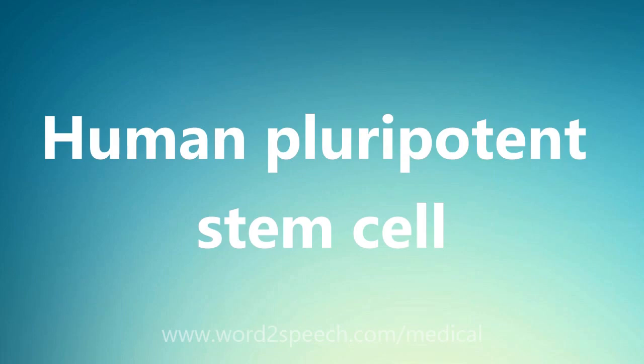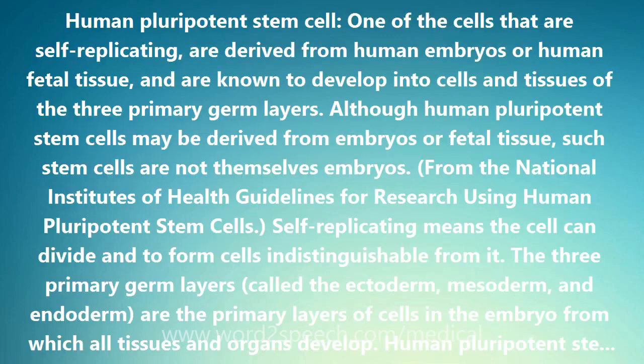Human pluripotent stem cell: one of the cells that are self-replicating, are derived from human embryos or human fetal tissue, and are known to develop into cells and tissues of the three primary germ layers.